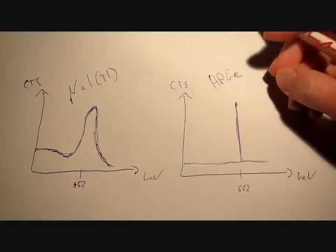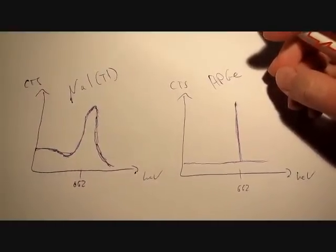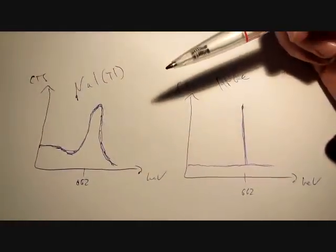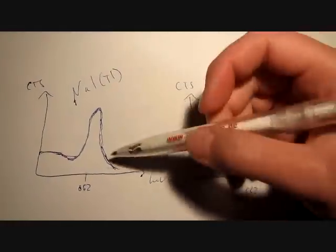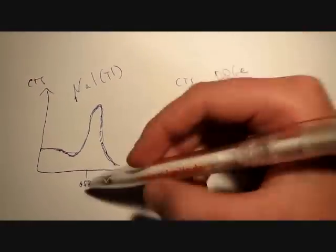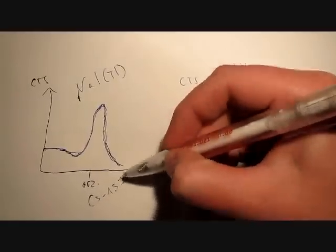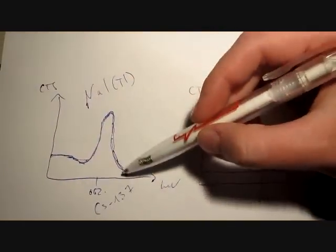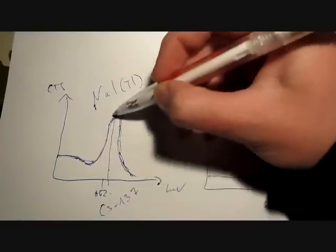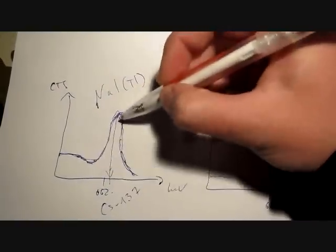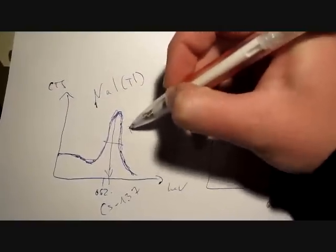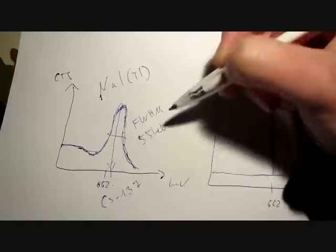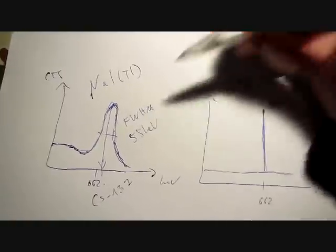The energy resolution depends on the type and of course also the quality of the detector you are using. For example, you could have a sodium iodide crystal in your gamma spectrometer. Then the photopeak of cesium-137, which is at 662 keV, would produce a broad photopeak that will look sort of like this. And at half the maximum height, at the so-called full width at half maximum, the peak would be about 55 kiloelectron volts wide.